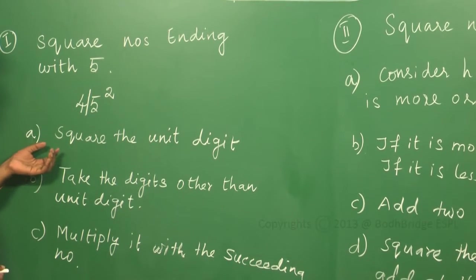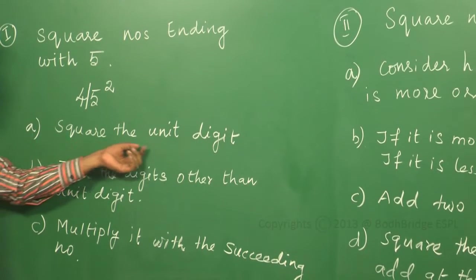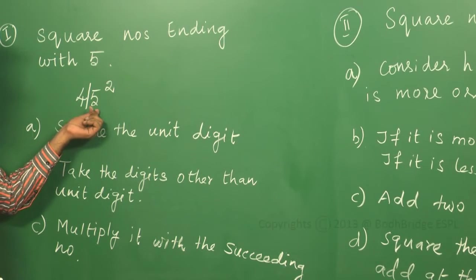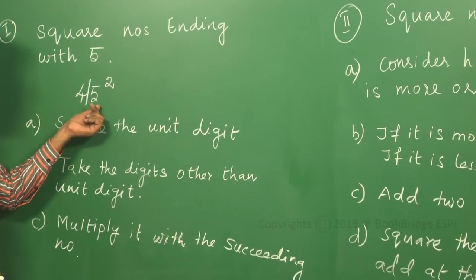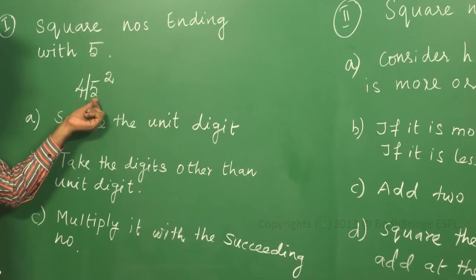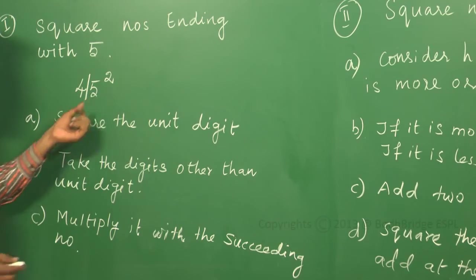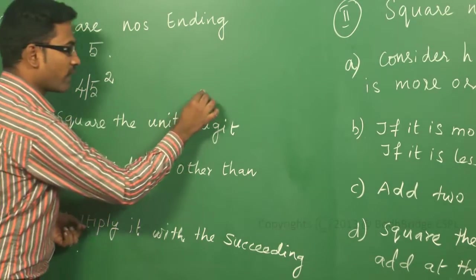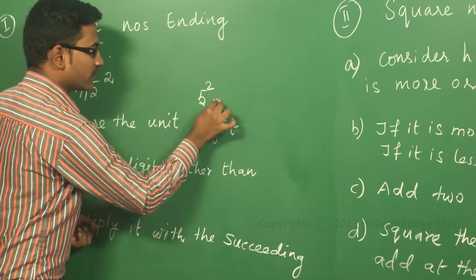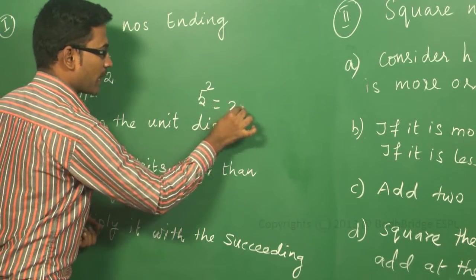The first step is you have to square the unit digit. What is the unit digit? The unit digit is 5. So 5 squared is 25. This is the first step you have to do.